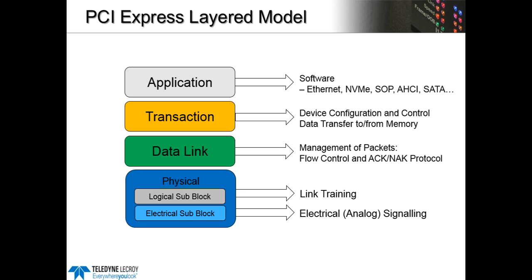Also built into the physical layer but not at the electrical level is the logical sub-block of the physical layer. That logical sub-block is where things like link training take place — where two devices try to talk to each other and establish a link to be able to transfer data. Each side of the link sends out patterns which lets the other side recognize that it's trying to train, and they negotiate certain features about the low-level link to eventually bring the link to the L0 state, in which case it can establish data transfer at the data link layer and above.